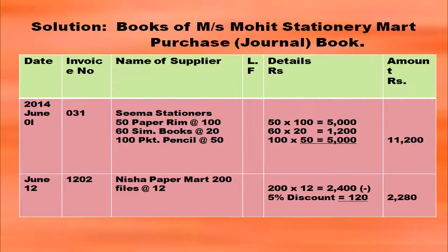Another purchase is done by this organization from Nisha Paper Mart: 200 files at rupees 12, so 200 × 12 = 2,400. Here a trade discount of 5 percent is given in the question, so 2,400 × 5/100 = 120. Trade discount should be deducted from the amount: 2,400 minus 120 gives 2,280.